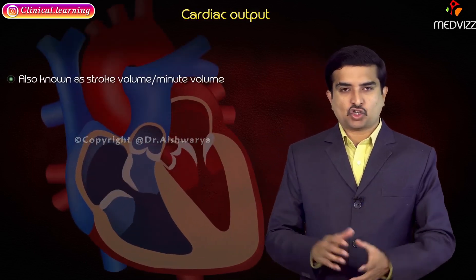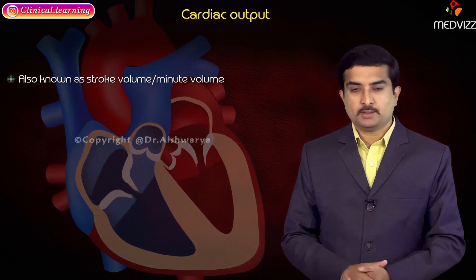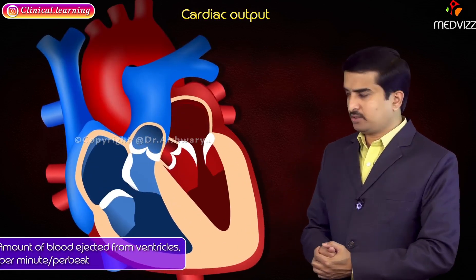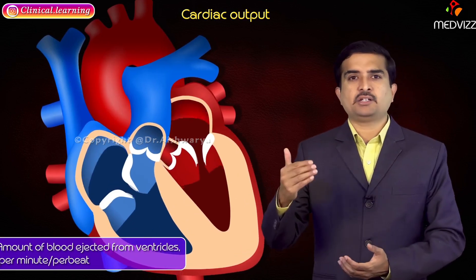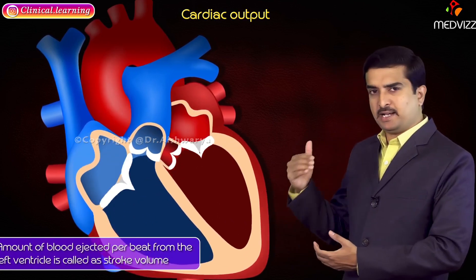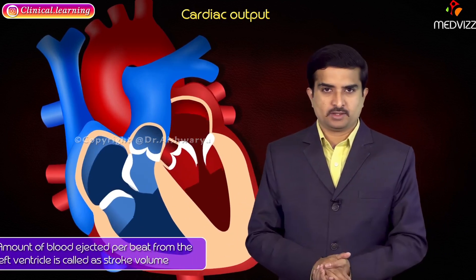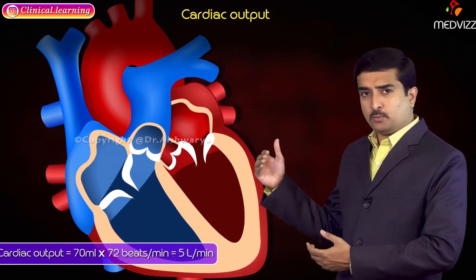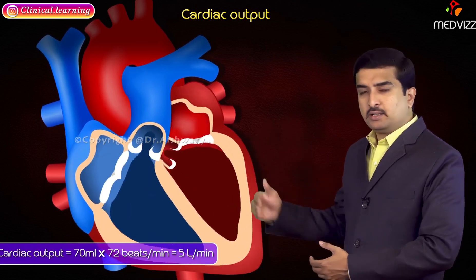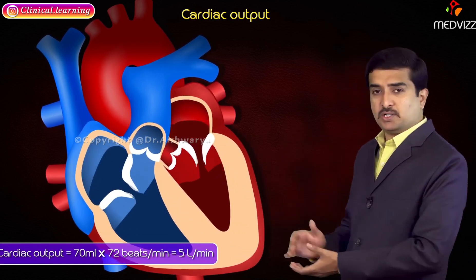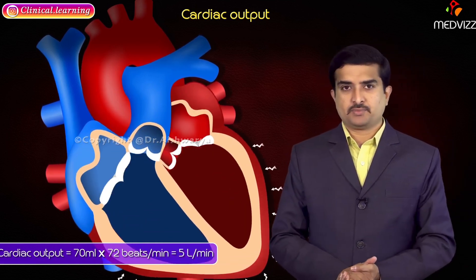Cardiac output can be calculated by several formulas. Stroke volume is also called minute volume. Cardiac output is the amount of blood ejected from the ventricles per minute or per beat. The amount of blood ejected per beat from the ventricle, especially from the left ventricle, is called stroke volume. Cardiac output can be calculated as 70 ml multiplied by 72 beats per minute, which equals approximately 5 liters.